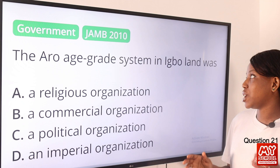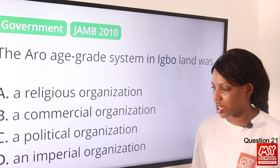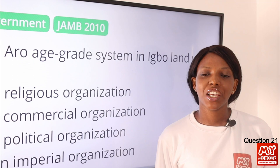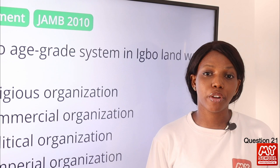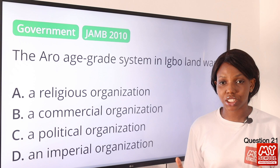The age grade system in Igbo land was: A, a religious organization; B, a commercial organization; C, a political organization; D, an imperial organization. The answer is option C, a political organization. The age grade is the oldest institution in the Igbo political system. Their roles include promoting unity among members, maintaining law and order, maintaining security of lives and property, and implementing policies. These are all political activities, so the answer is definitely option C.